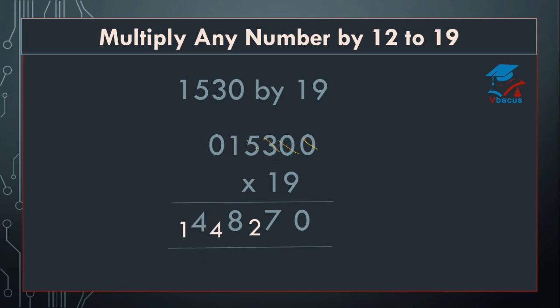Cut 5. 9 zeros are 0 plus 1 equals 1. Write 1. So this 1 will be added to 1, this 4 will be added to 4, and this 2 will be added to 8. Again it will become 10, and 1 will be added to this 8. So your final answer will be 29070.